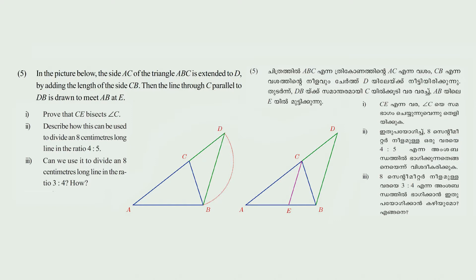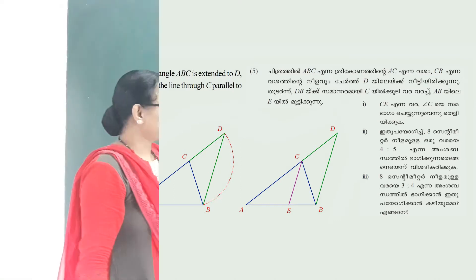First question: prove that CE bisects angle C. Second question: draw how this can be used to divide an 8 cm long line in the ratio 4 to 5. Third question: can we use it to divide an 8 cm long line in the ratio 3 to 4?